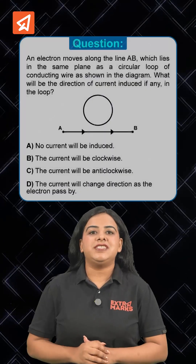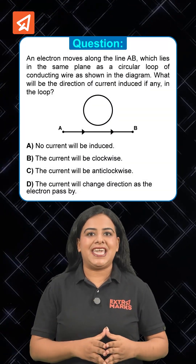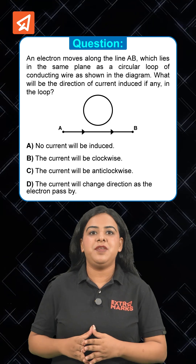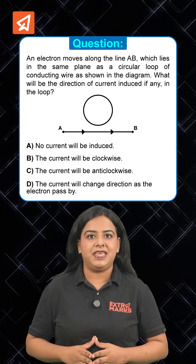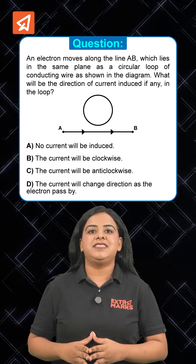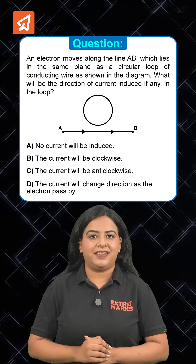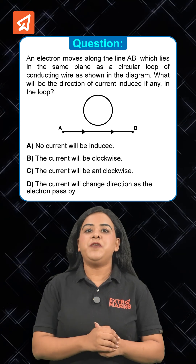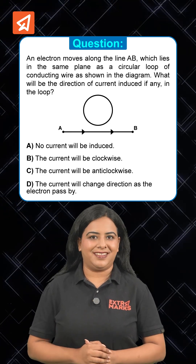Let's learn this concept with the help of a question which says that an electron moves along the straight line AB, lying in the same plane as a circular conducting loop. What will be the direction of induced current in the loop?